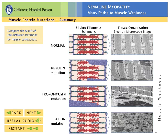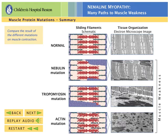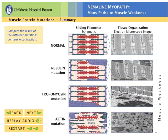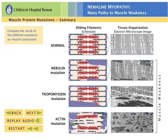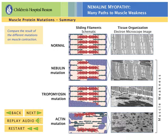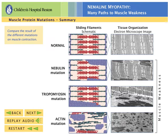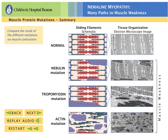Here you can view the effects of these mutations simultaneously, comparing them directly to each other. As you can see, all three kinds of mutations ultimately weaken muscle contraction, but they do it in different ways. Once you've viewed these animations, click the Next button and I'll answer some questions about the congenital myopathies. Thank you.